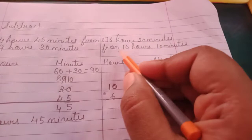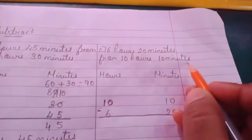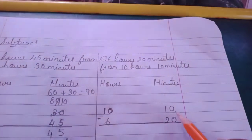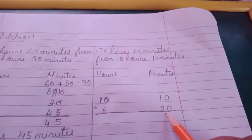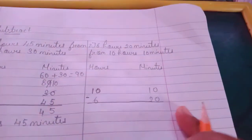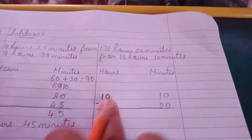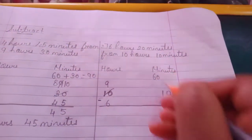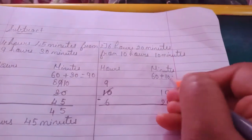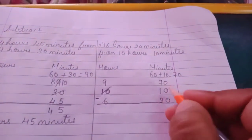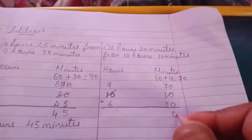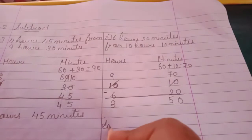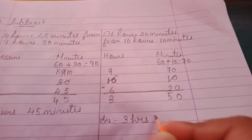Number 2: 6 hours 20 minutes from 10 hours 10 minutes. Arrange in a vertical column — hours and minutes. 10 hours 10 minutes minus 6 hours 20 minutes. 10 is smaller than 20, so we borrow from hours — borrow 1 hour from 10, it becomes 9. 1 hour equals 60 minutes, add to 10 to get 70. Subtract 20 from 70: 0 minus 0 is 0, 7 minus 2 is 5. 9 minus 6 is 3. Answer: 3 hours 50 minutes.